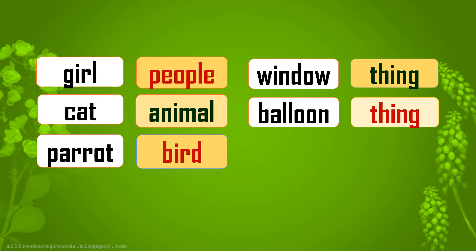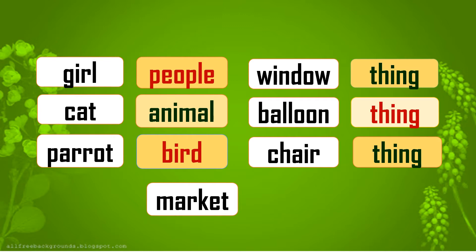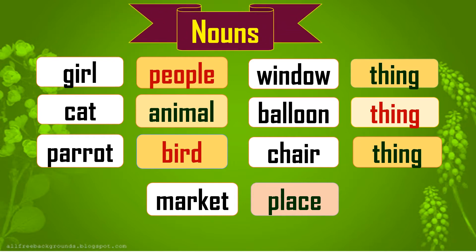Window is a thing and balloon is also a thing. The next thing was chair — chair is also a thing. And the last picture was of a market. Market is not people, not animals, not birds, not things. Then what is market? It is a place where we go to buy our things. So all these things together are called nouns in English.